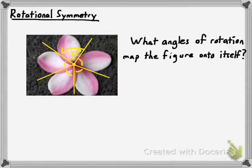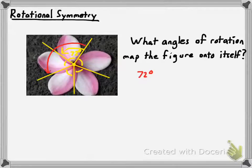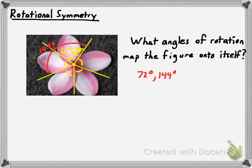So what angles of rotation would map this figure onto itself? A 72-degree rotation would certainly do it. But there's a little more than that — couldn't I just rotate two sections at once? Going 144 degrees would also map it onto itself. We're only going to care about rotations that are 180 degrees or less, so those are our angles for this example of rotational symmetry.